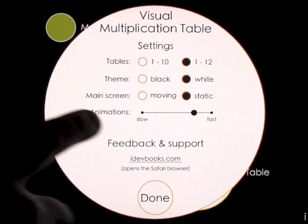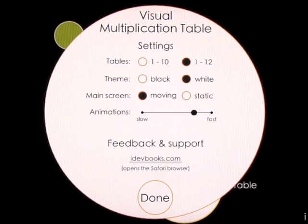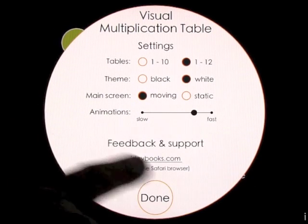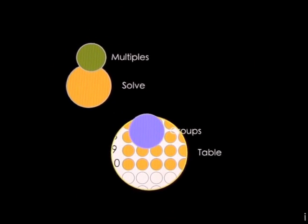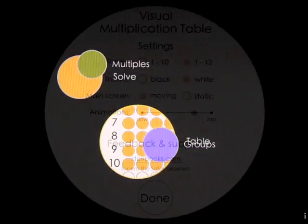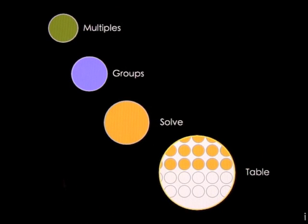The main screen can be moving or static. Now if I put it on moving, you'll see the dots in the background start to move. You can change the animation if you want to. But when we click done, it's just a cool effect of them moving around. If I go back in and put that on static and click done, you'll see they're all in one group. So we'll leave it like that for the demo.